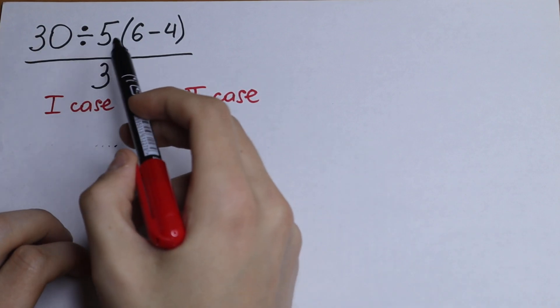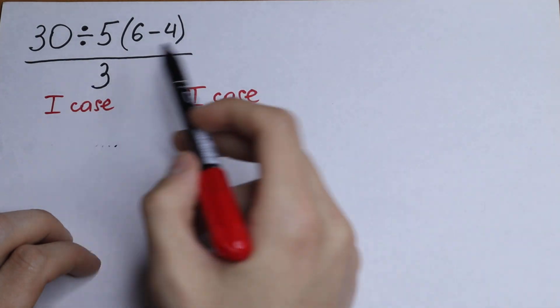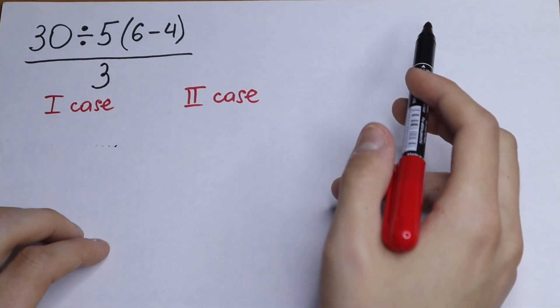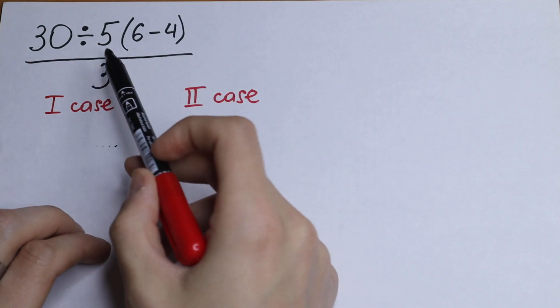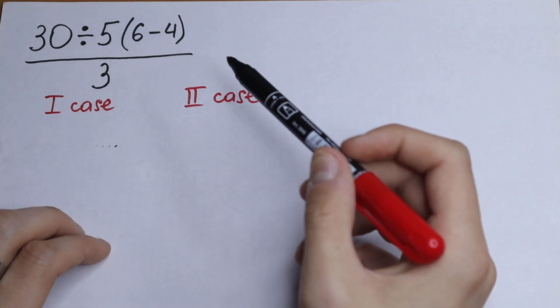So we have 30 divided by 5, parentheses 6 minus 4 over 3, all over 3. Pause the video and try to solve it by yourself. Of course it's an easy question. Find your answer and write your answer in a comment.